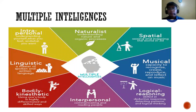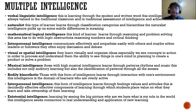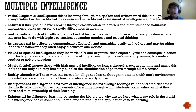Let us expound on each of the nine types of intelligence. Verbal-linguistic intelligence involves learning through spoken and written words. This intelligence is highly valued in traditional classroom settings and in traditional assessments of intelligence and achievement. Naturalist intelligence: these learners learn through classifications, categories, and hierarchies, and pick up on subtle differences in meaning.